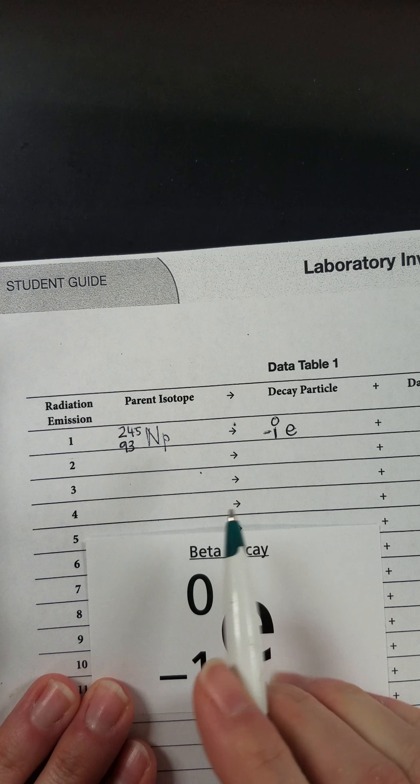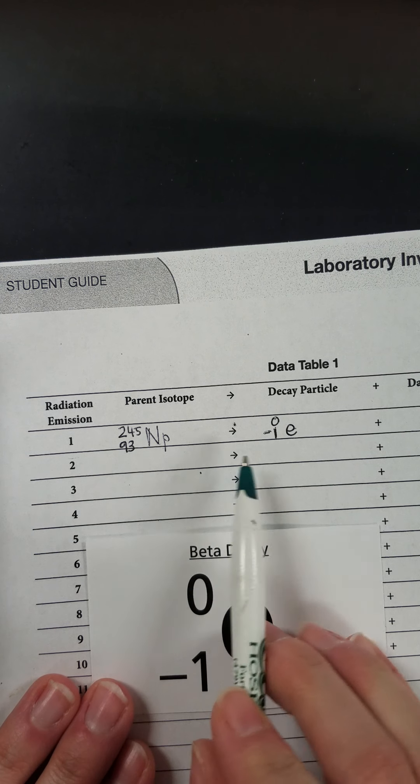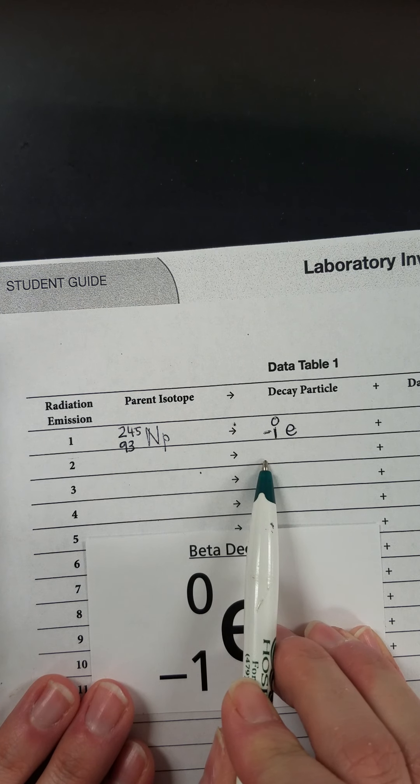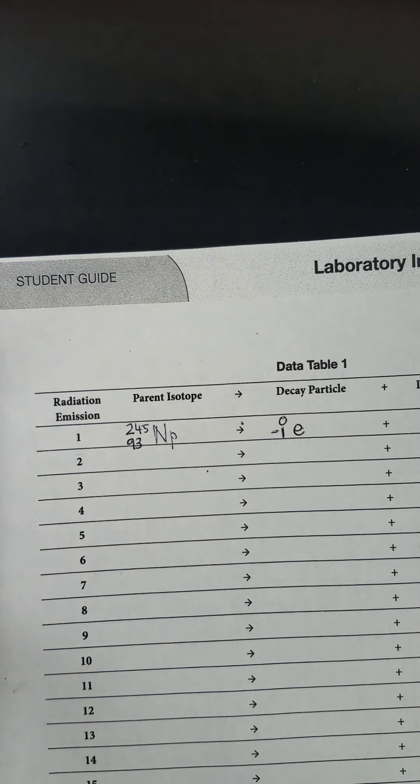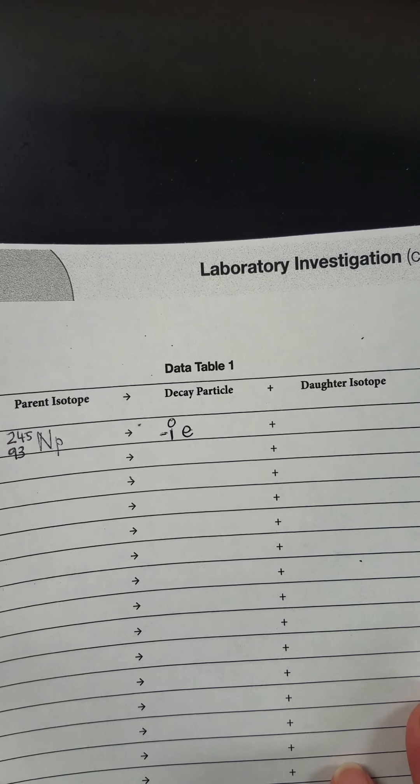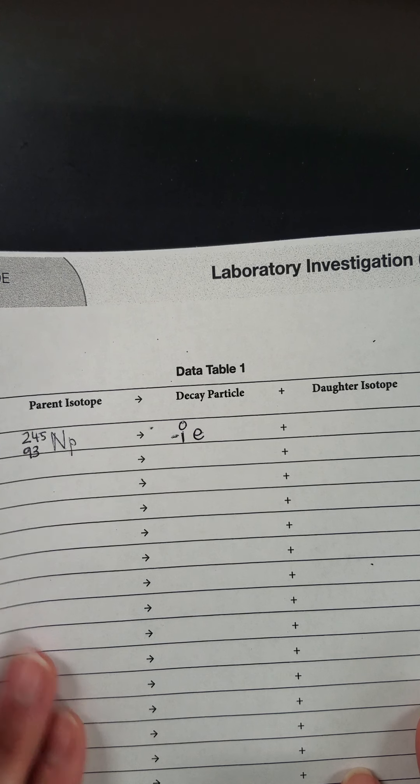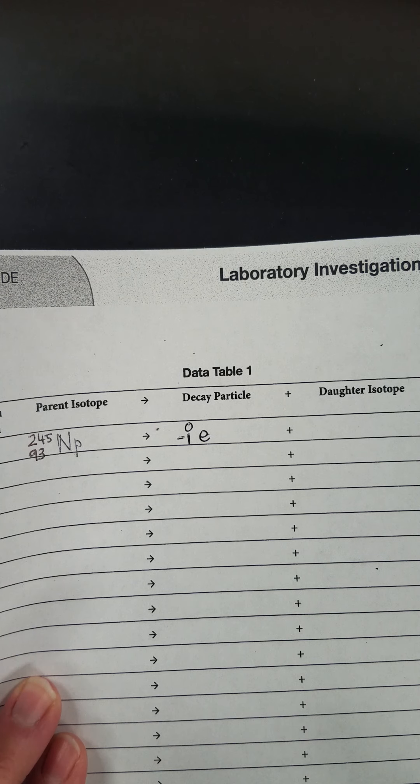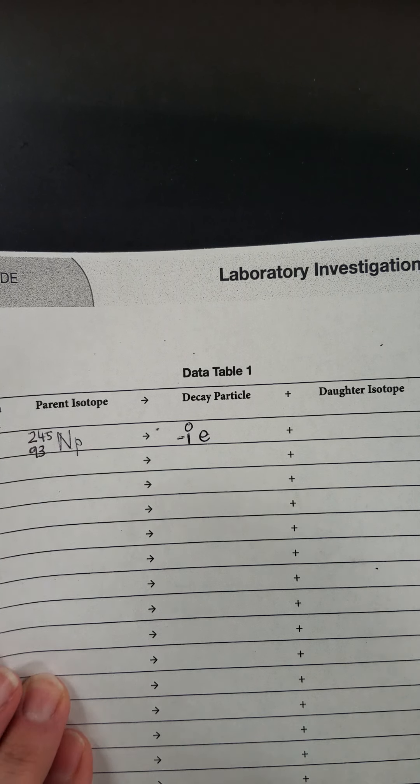So now I have my parent isotope I started with, I have my decay particle, and I have to figure out my daughter isotope. And so I'm going to balance this equation just as I would any other type of equation.